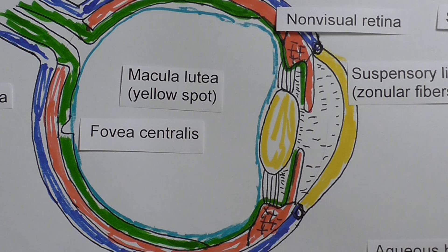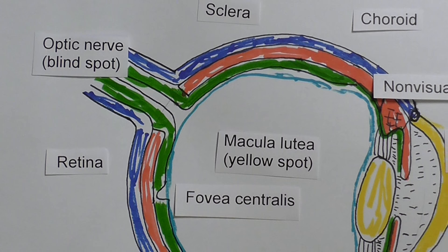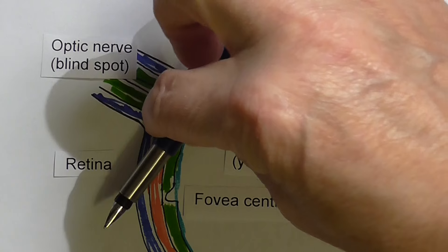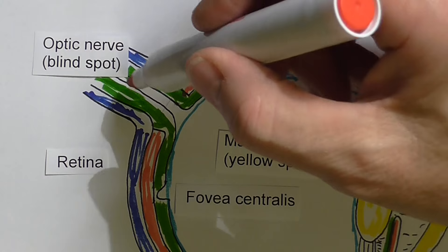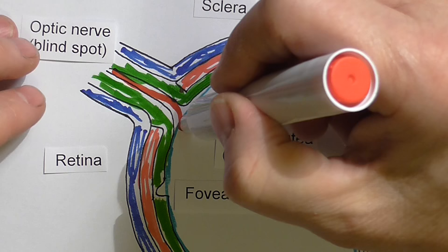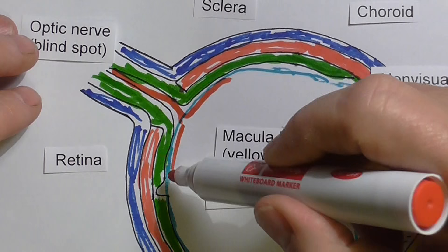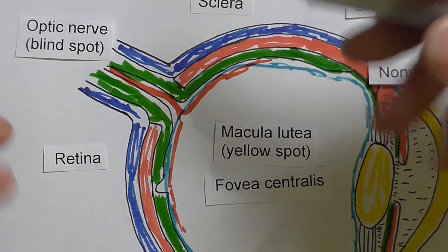At the back we have the optic nerve — much more on that later. It's a fascinating course of the optic nerve, taking the electrical impulses with the visual information away towards the brain. At the same time it contains the central retinal artery taking the blood supply to the retina, to the retinal arteries. You can see these with an ophthalmoscope — they're quite beautiful to look at — along with the veins draining away as well.